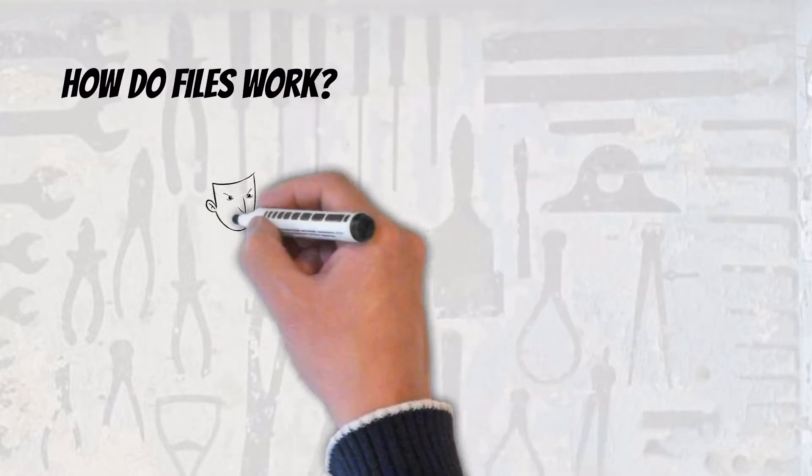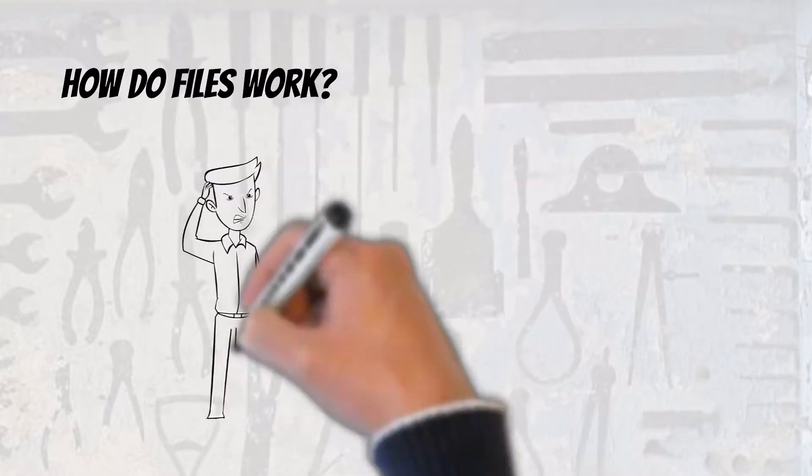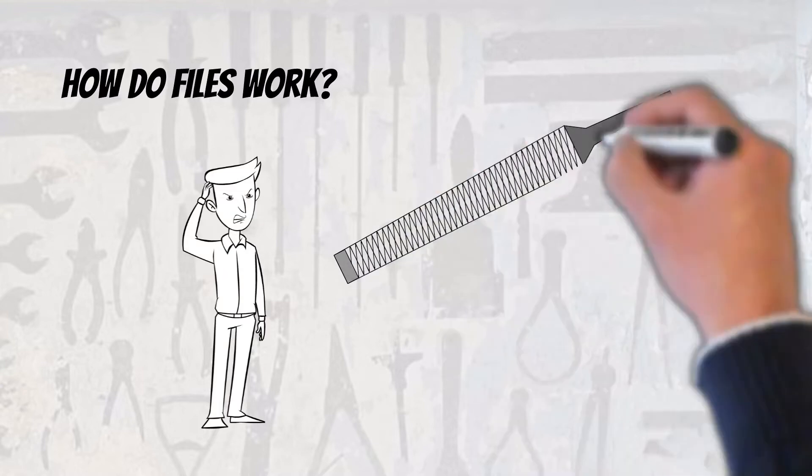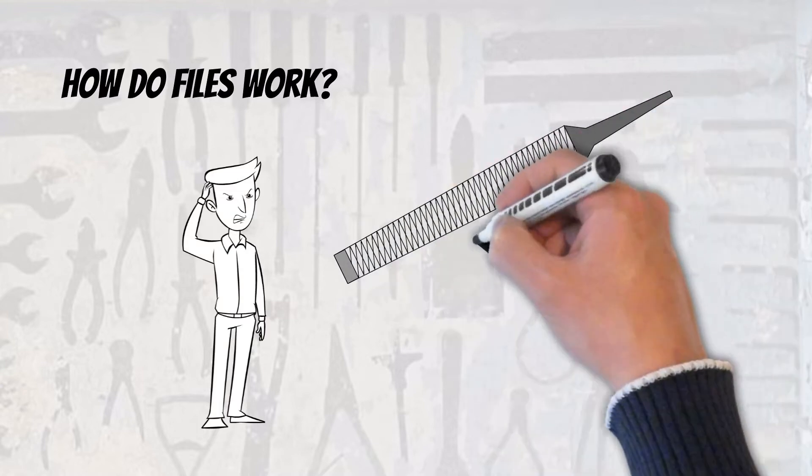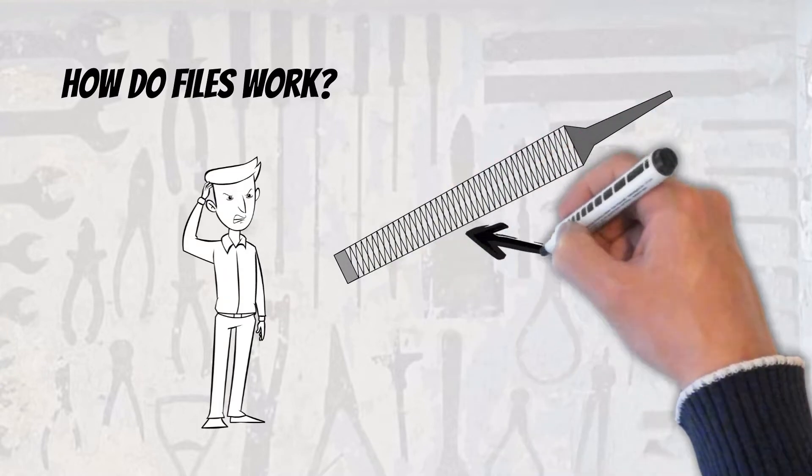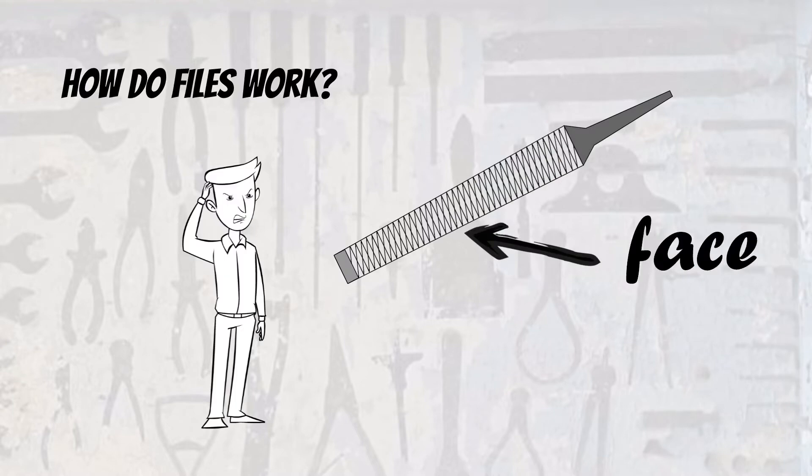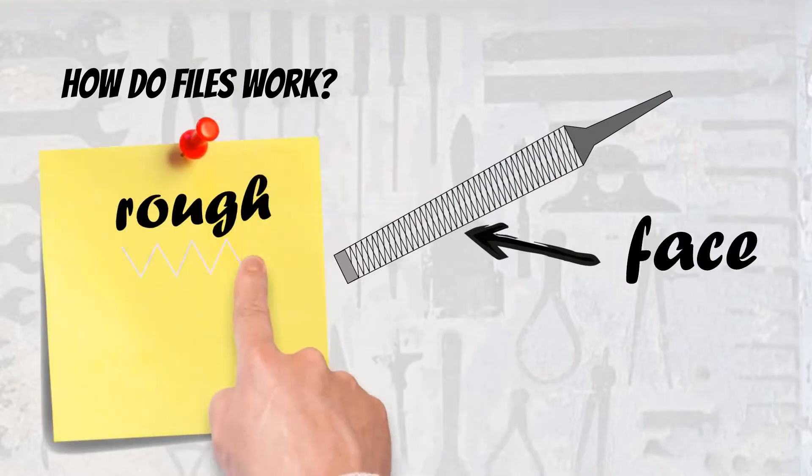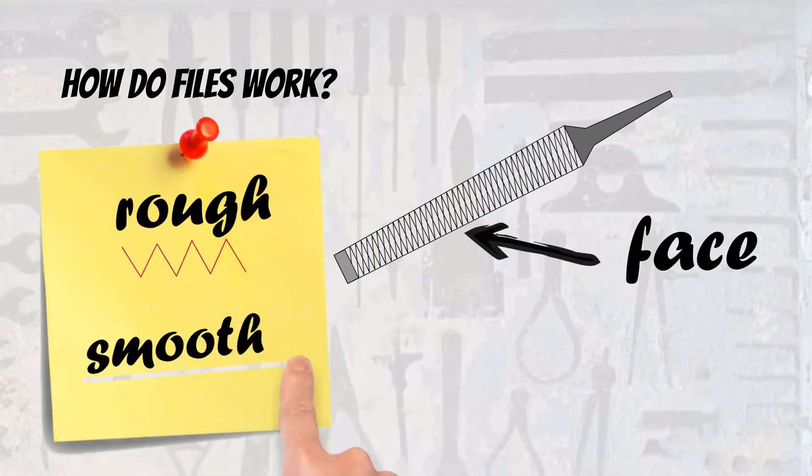How does a file work? On one side of a file, the part that does all the work is called the face. The face is rough; this roughness is caused by teeth that are cut into the face.